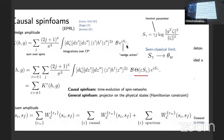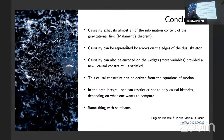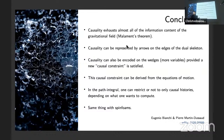Conclusions: First, causality captures almost all information about the metric except the conformal factor — that's Malament's theorem. Second, causality can be represented by arrows on edges of the dual skeleton, or encoded on wedges with more variables and the additional causal constraint. Third, this causal constraint can be derived from the equations of motion. Fourth, when going to the path integral, we can restrict or not to causal histories depending on what we want to compute. In spin foams we find the same structure: whether to restrict to causal configurations is a physically meaningful choice.